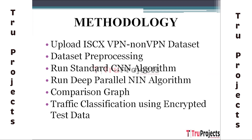The fourth module is running the deep parallel NIN algorithm. The deep parallel network in network (NIN) algorithm is another neural network model employed for classification. NIN is known for its ability to capture intricate relationships within data through its unique architecture. By running the deep parallel NIN algorithm, the project aims to improve classification accuracy and robustness compared to traditional methods.